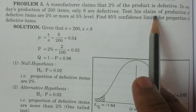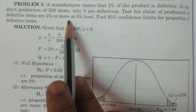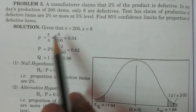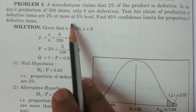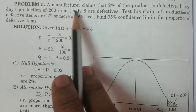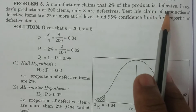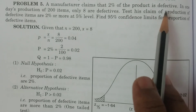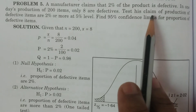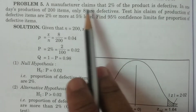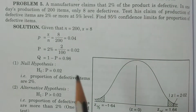The question asks to test whether the production of defective items are 2% or more. The manufacturer claims 2% of the product is defective — that is the claim of the manufacturer. Hence, this 2% is the population proportion, capital P.